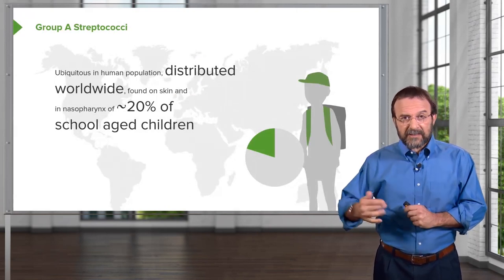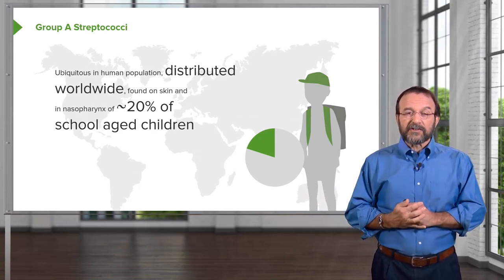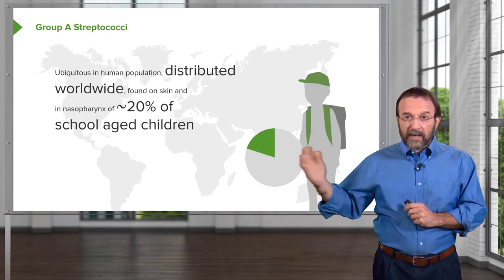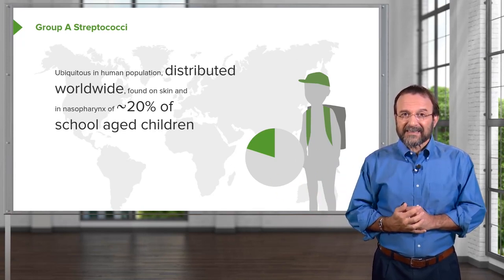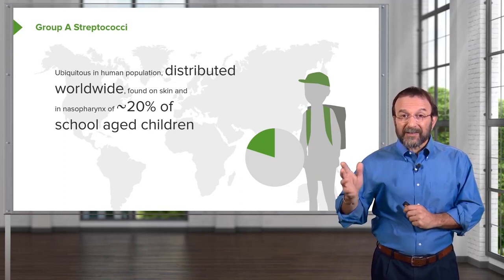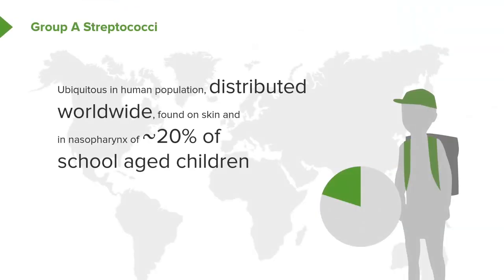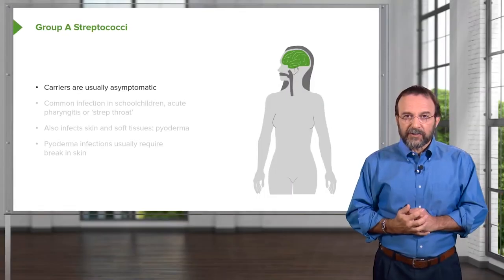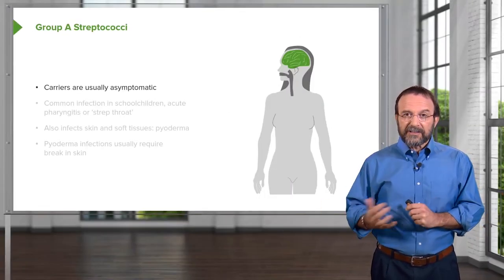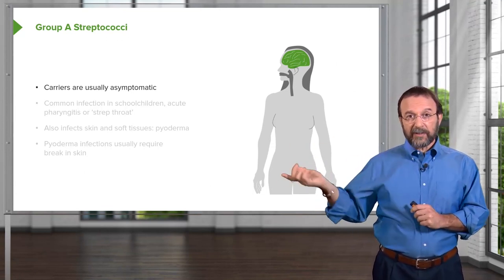Just like staphylococci, many people carry streptococci as well. This is ubiquitous in the human population — worldwide, in every country — and it's found on the skin and nasopharynx of about 20 percent of school-aged children. So in any random classroom in the world, about 20 percent of those kids have streptococci on and in them.